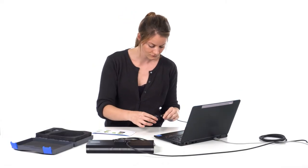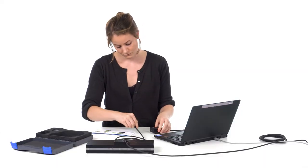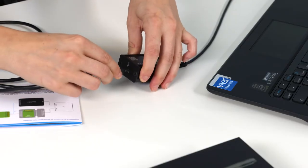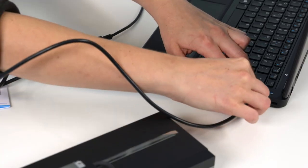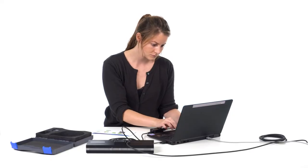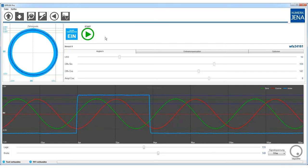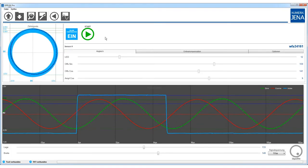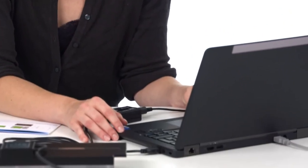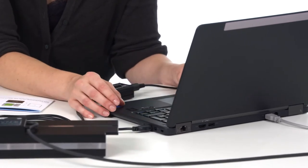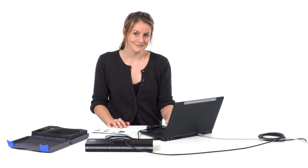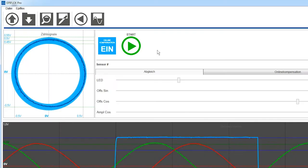Laina now connects the measuring system and the PC to the adjustment tool and starts the EpiFlex software on the computer. As soon as the software has successfully detected the adjustment tool and the measuring system, the measuring signals will be displayed in the form of a Lissajous figure. Numeric Jena's measuring systems have an integrated function called online compensation. This function monitors the measurement signals during operation and is able to compensate signal fluctuations in real time.